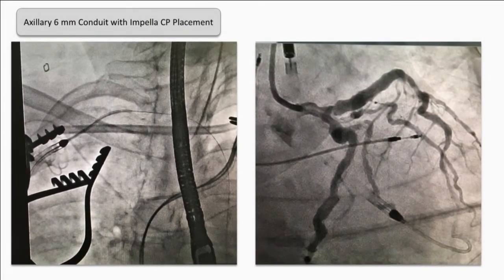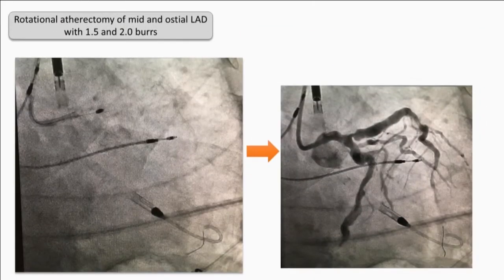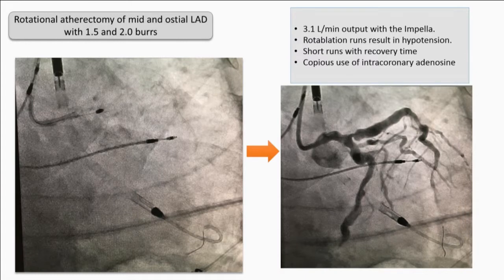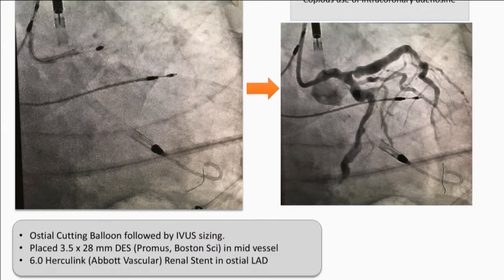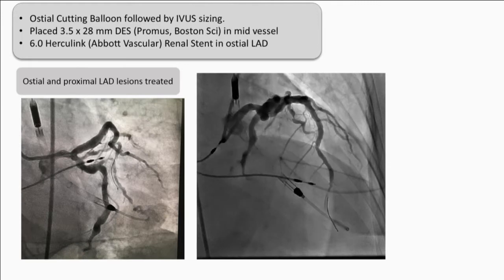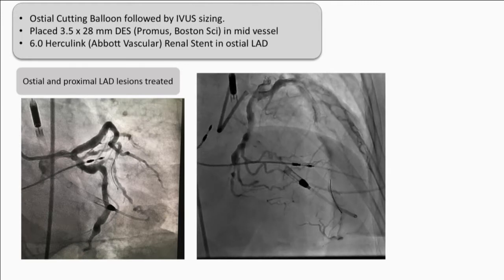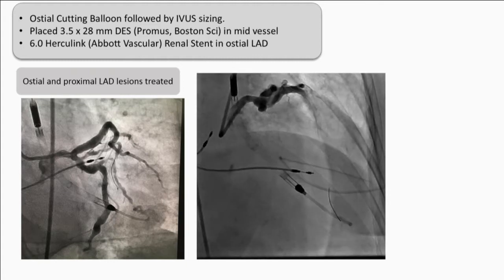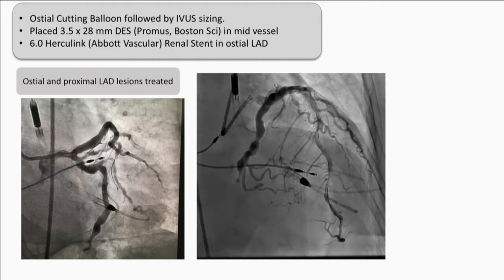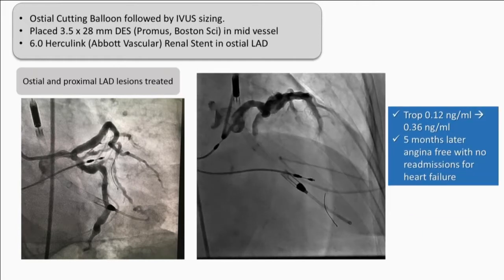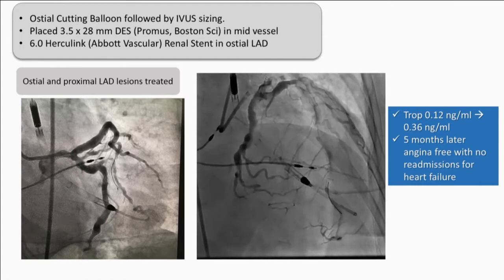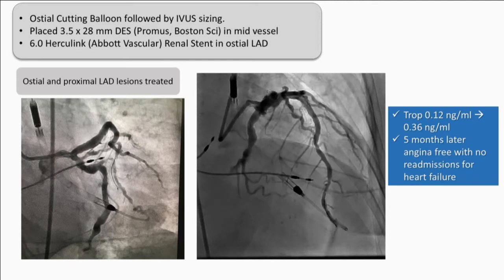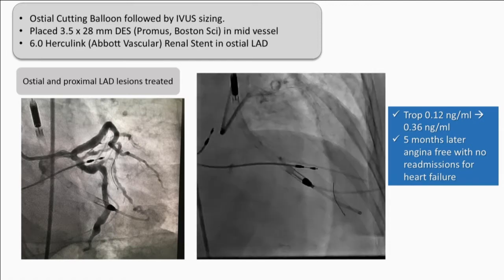Due to poor vascular access, surgeons placed a conduit in the axillary artery. We placed an Impella CP catheter for support. Rotational atherectomy was performed with 1.5 and 2.0 burrs — each run resulted in hypotension, so we used short runs with copious intracoronary adenosine. Ultimately, IVUS-guided PCI with a cutting balloon, placing a 3.5×28mm DES in the mid-vessel and a 6.0 renal stent at the osteo-LAD. At the end of the case, we had restoration of baseline flow. Troponin went from 0.12 to 0.36 — overall successful given the disease burden. Five months later, she's angina-free with no heart failure readmissions.